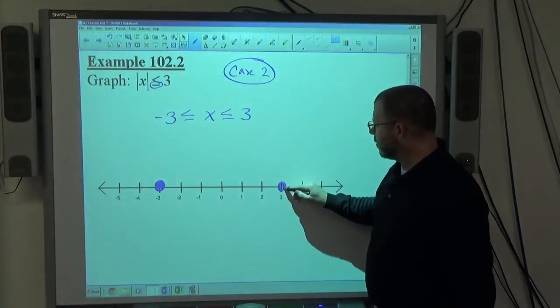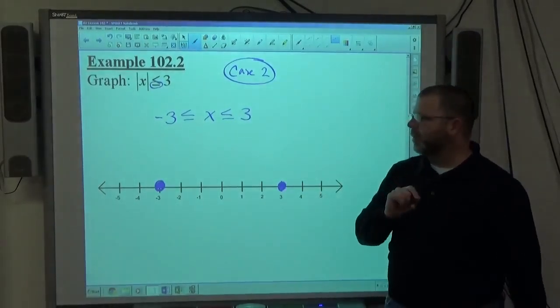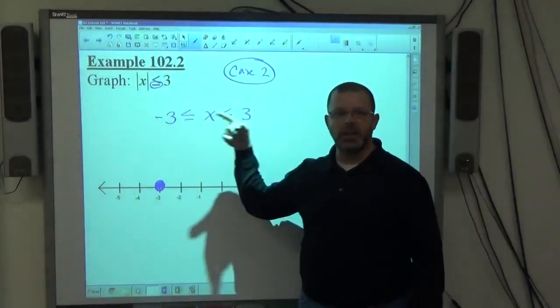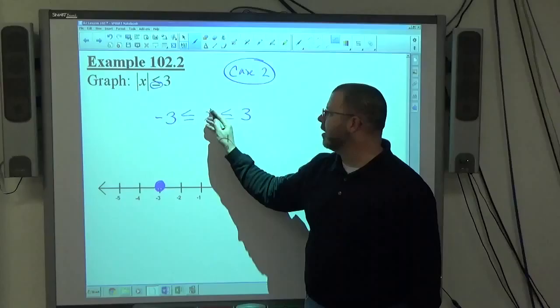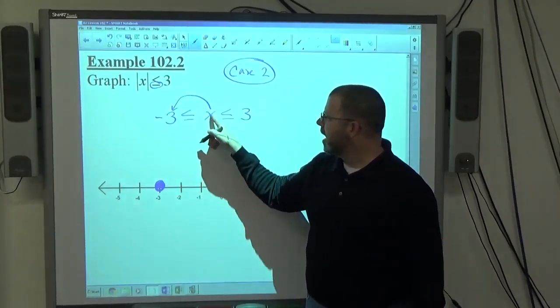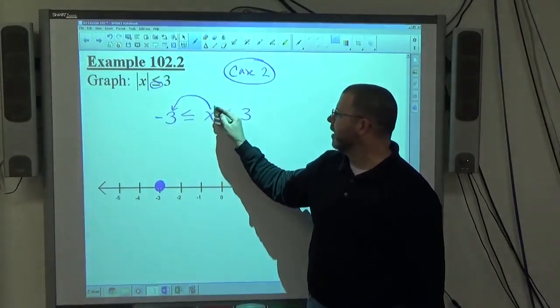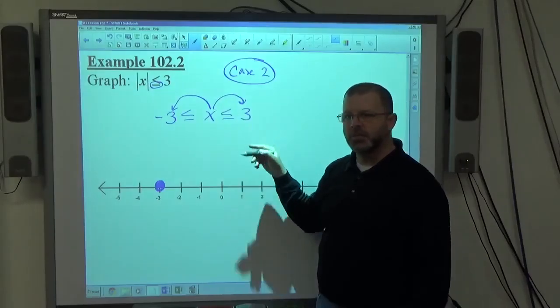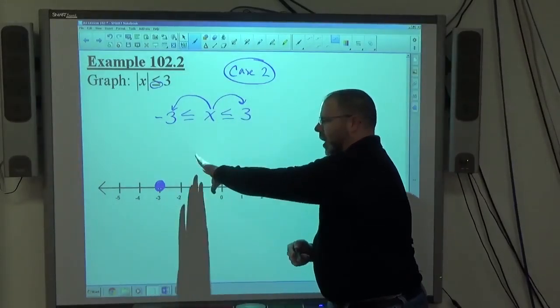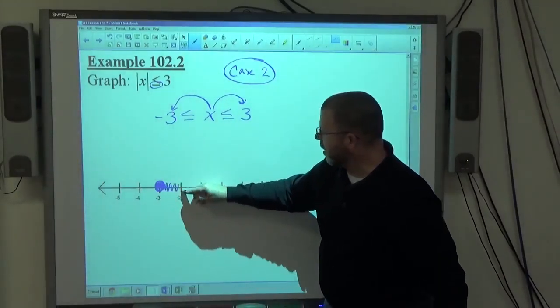One thing that messes people up is we see less than and we think left for less than, but we're always reading from the letter to the number. X is bigger than negative 3, X is less than positive 3. Bigger than negative 3 and less than positive 3 at the same time would be shaded in between.